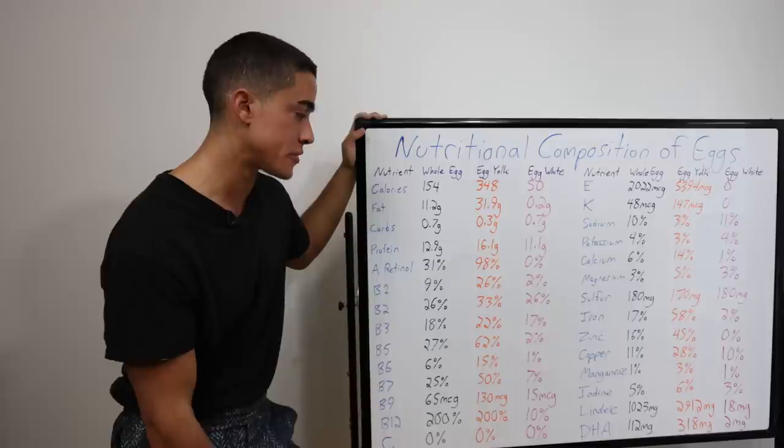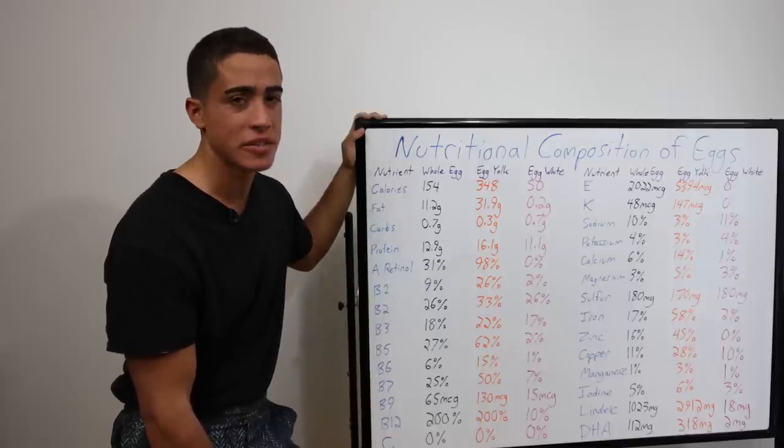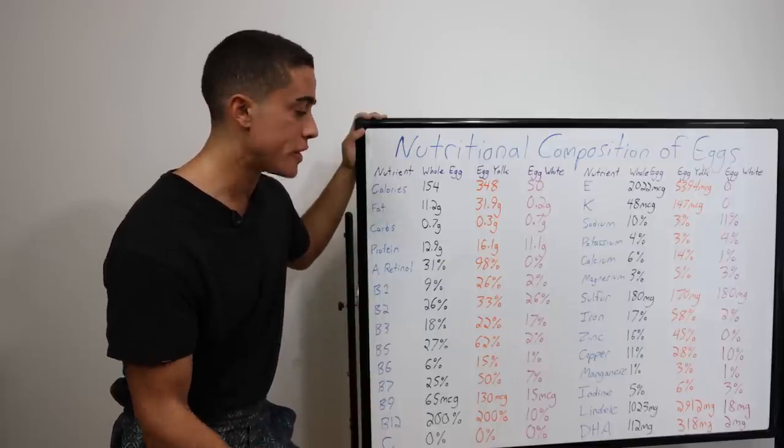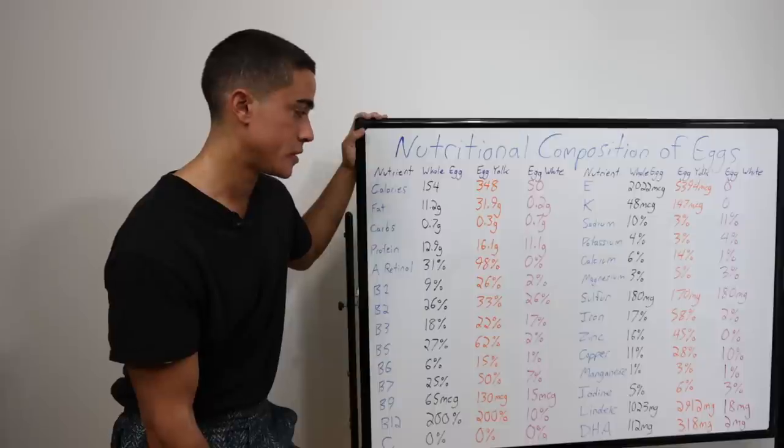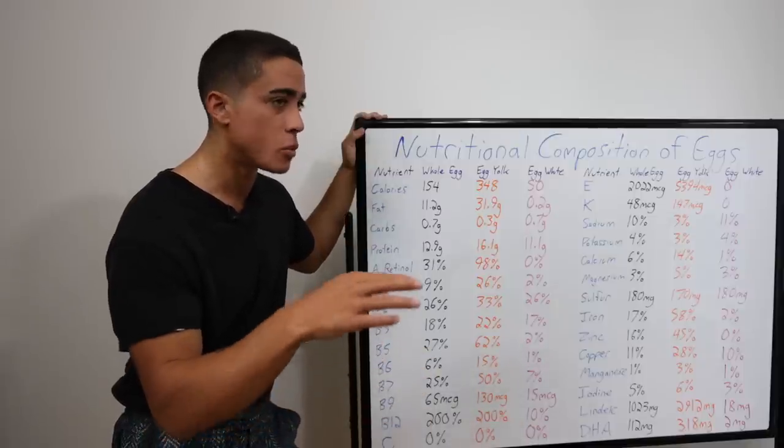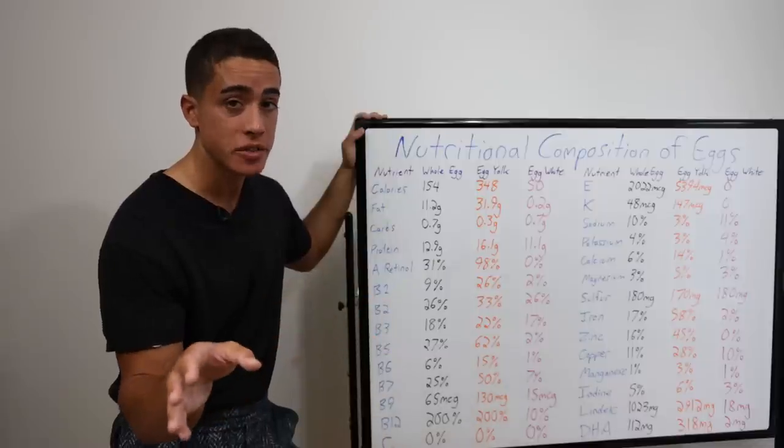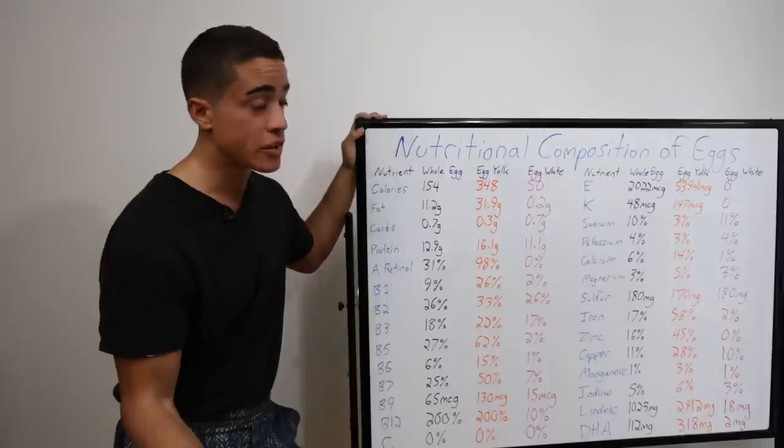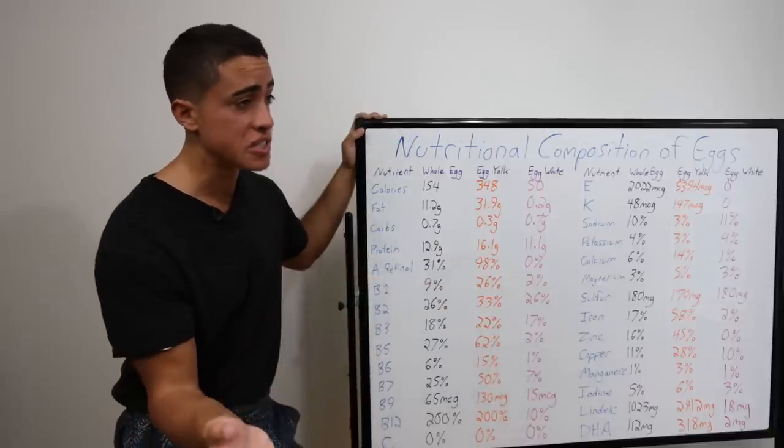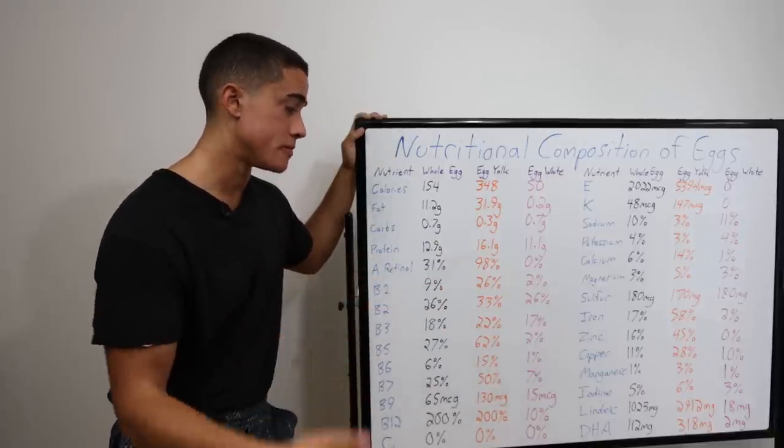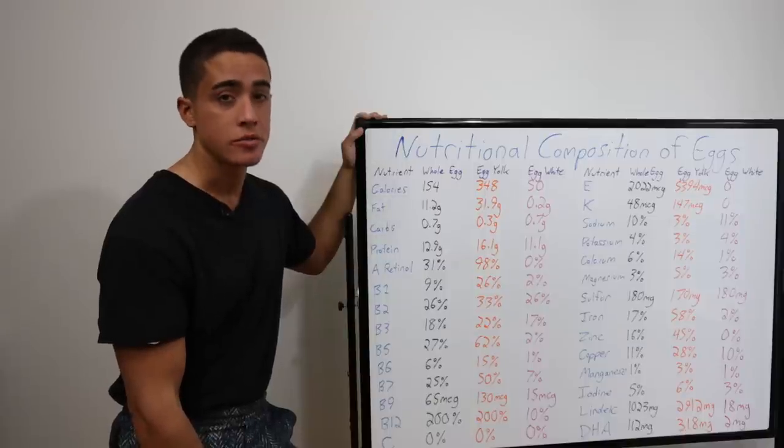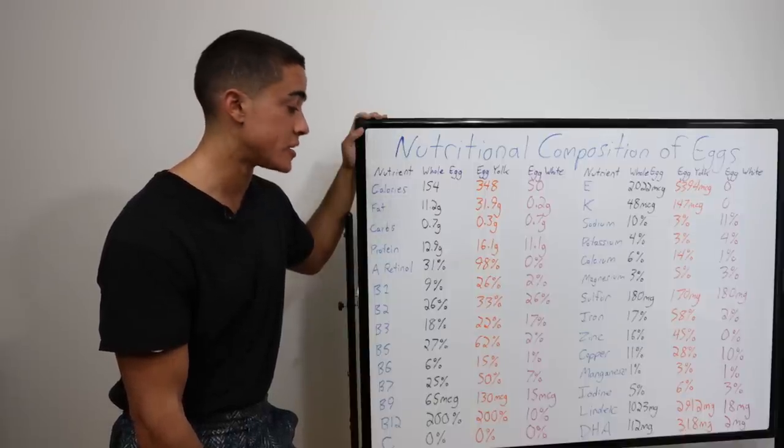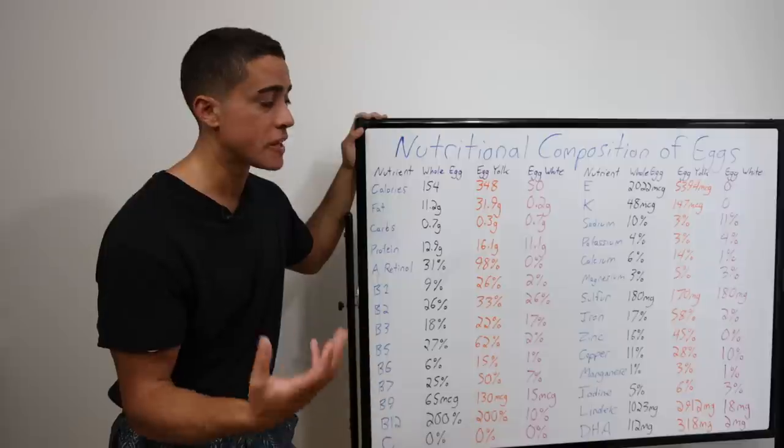Manganese, not too significant. I didn't put selenium on here, but eggs do have a decent amount of selenium in both the egg yolk and the egg white. Iodine, one of the few animal foods that have some. Dairy does sometimes as well. But again, if you're supplementing your chickens with seaweed, that's one way that the food is going to have a much higher iodine content. And farmers don't really care that much. They don't have an understanding of nutrition.